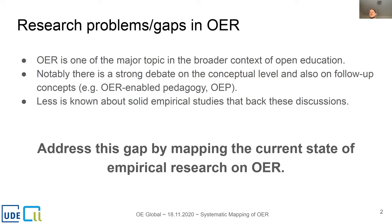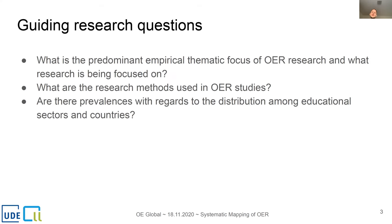We were guided by three major questions for our systematic mapping. First, in empirical terms, what are the predominant thematic focuses of OER research? Second, which research methods are used in these studies — for example, surveys, interpretation of data, or qualitative studies? Third, the prevalence of studies concerning educational sectors such as school, higher education, and vocational education, and also in which countries most empirical research on OER is being done.